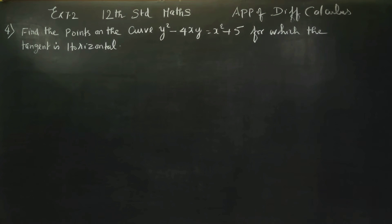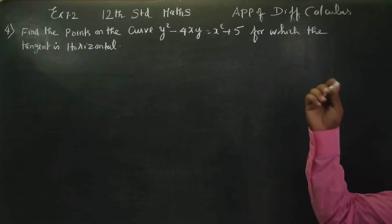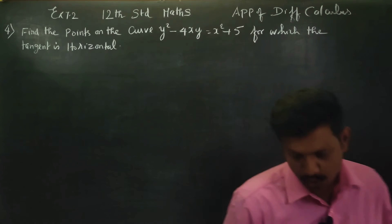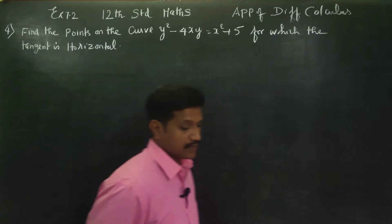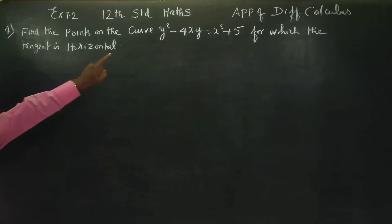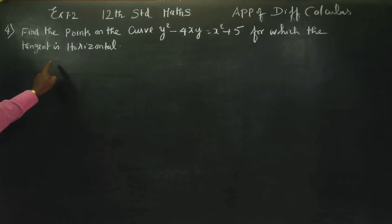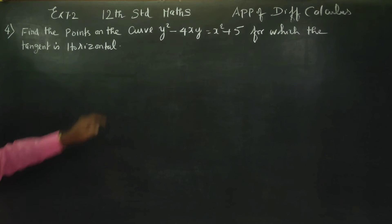Hello students. I am Karanagaran. In applications of differential calculus, exercise 7.2, problem number 4: find the points on the curve for which the tangent is horizontal.